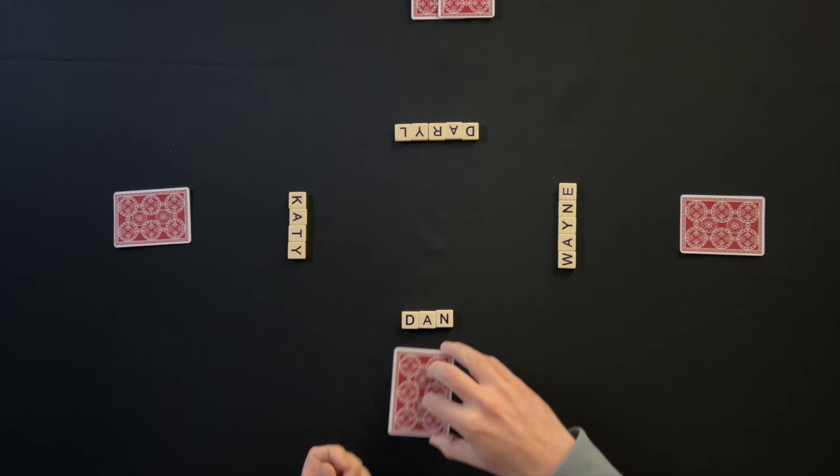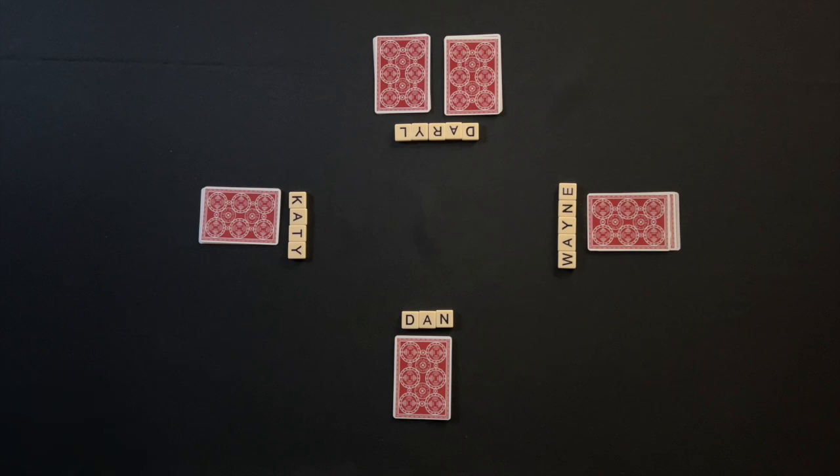At the end of a round, if the team that called Trump took three or four tricks, they are awarded one point. Here, Daryl called Trump and his team won three tricks. Daryl and Dan are awarded one point.